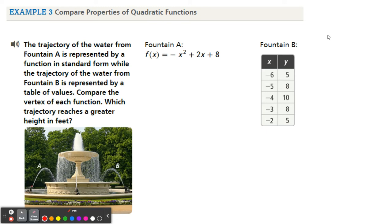So again, typically trajectory is like parabolic motion. So you can see how this A is going to go up and down like this fountain, so is B up and down. And the question is compare the vertex of each, which trajectory reaches a greater height in feet? So because these parabolas are opening down, remember that the vertex is going to be called the maximum. So when a parabola opens down, that vertex is called the maximum, and we want to know which one is greater. So which one has a bigger y value, a greater y value.